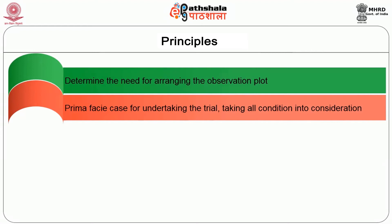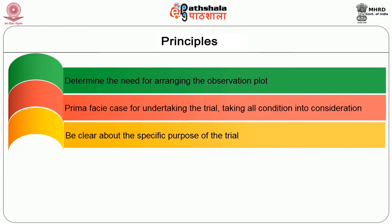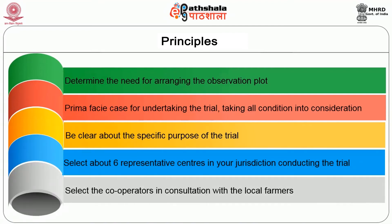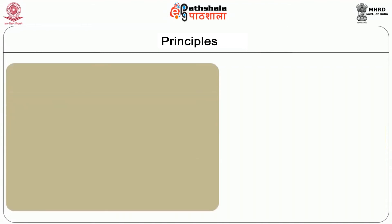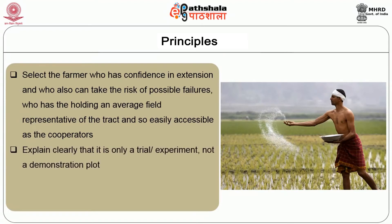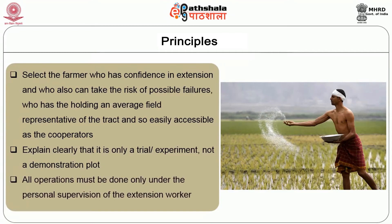The principles for conducting an observation plot include: determine the need for arranging the observation plot; be clear about the specific purpose of the trial; select about six representative centers in your jurisdiction; select cooperators in consultation with local farmers; select farmers who have confidence in extension work and can take the risk of possible failures, who have holdings and average fields representative of the tract and easily accessible; and explain clearly that it is only a trial or experiment, not a demonstration plot.